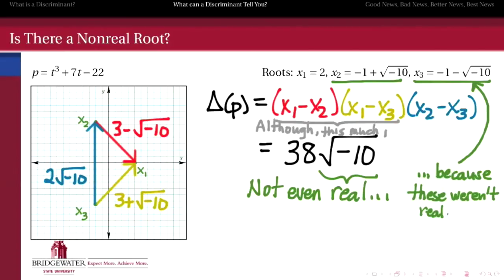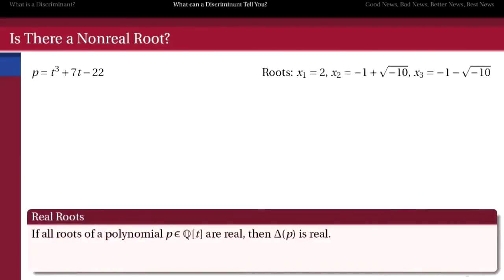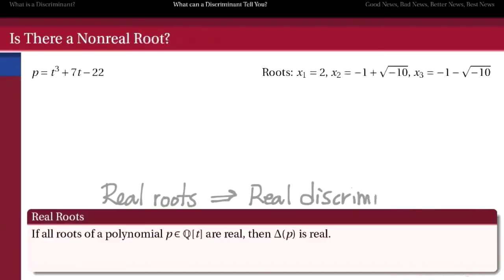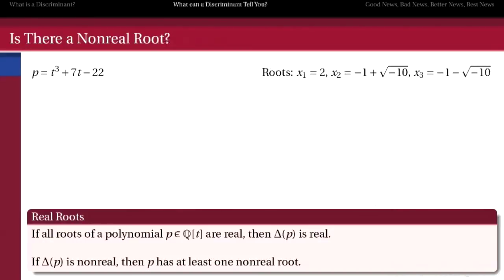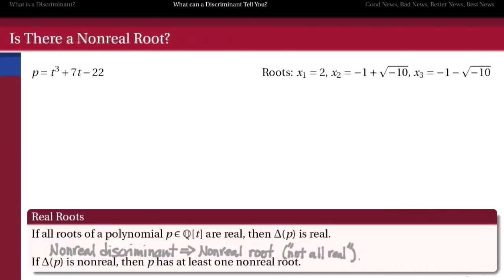On the other hand, the product of the first two roots was real — the product of the red and the yellow arrows here is the real number 19. But remember, when you find the discriminant, we have to multiply the differences of all pairwise roots together, and when we do that, this becomes not real anymore. The general statement is that if all the roots of our polynomial were real numbers, then our discriminant must be a real number — all real roots imply a real discriminant, because then the discriminant would be the product of differences of real numbers, and the real numbers form a ring. The contrapositive: if our discriminant is not a real number, then our polynomial must have at least one non-real root.